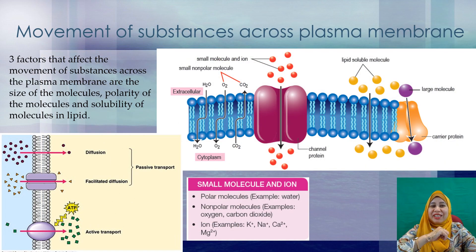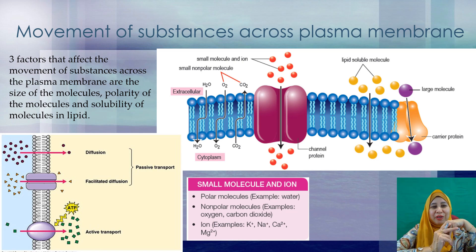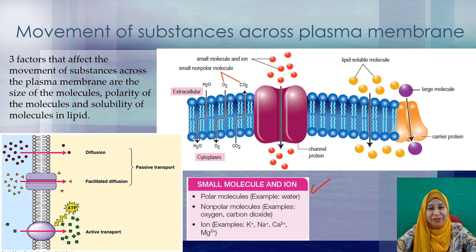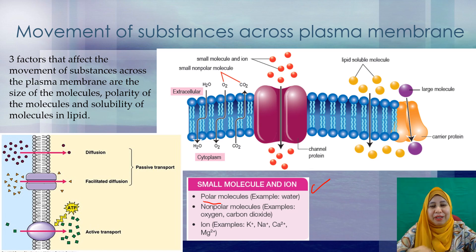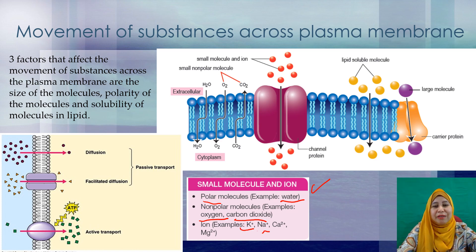There are three factors that affect the movement of substances across the plasma membrane. The first one is the size of the molecules. The second one is the polarity of the molecules. And the third factor is the solubility of the molecules in lipid. Examples of small polar molecules include water; non-polar molecules include oxygen and carbon dioxide; and ions include potassium ion, sodium ion, calcium ion and magnesium ion.